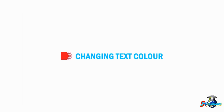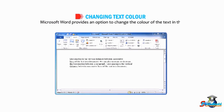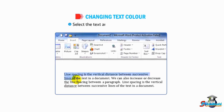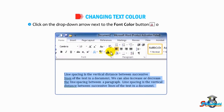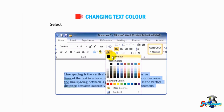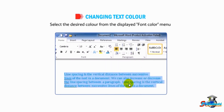Let us talk about changing the text color. Microsoft Word provides an option to change the color of the text. Select the text and click on the Home tab. Click on the drop-down arrow next to the Font Color button in the Font group. Then select the desired color from the displayed font color menu.